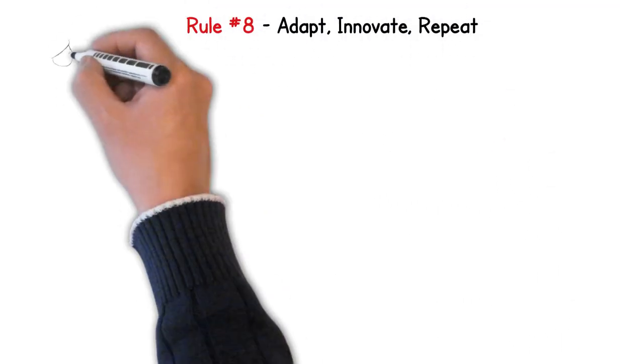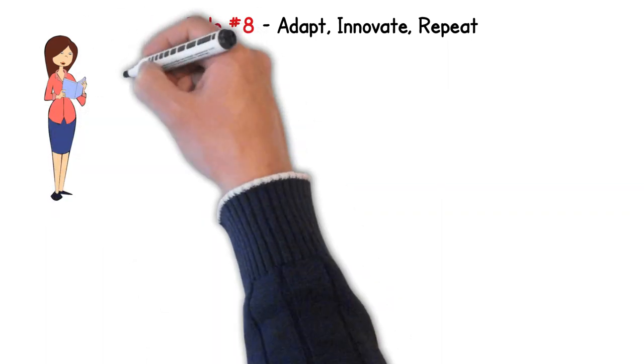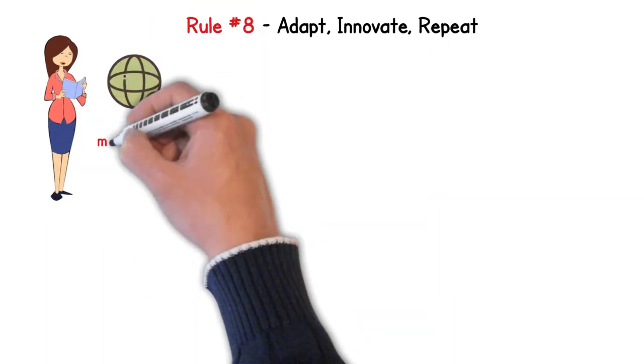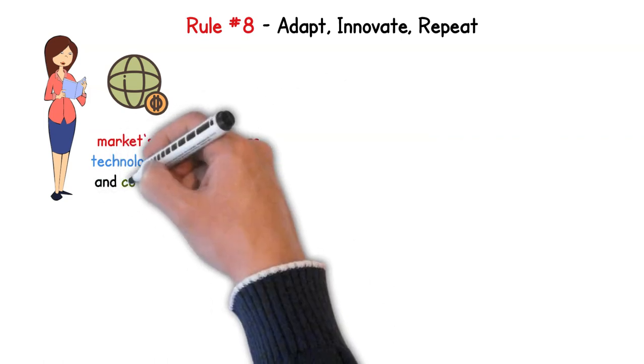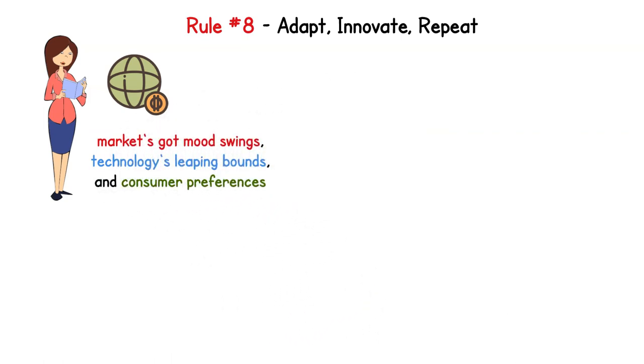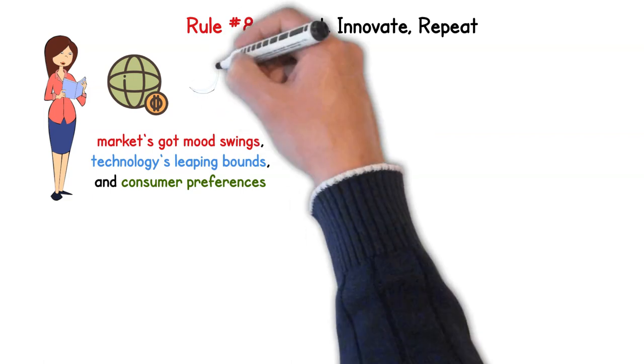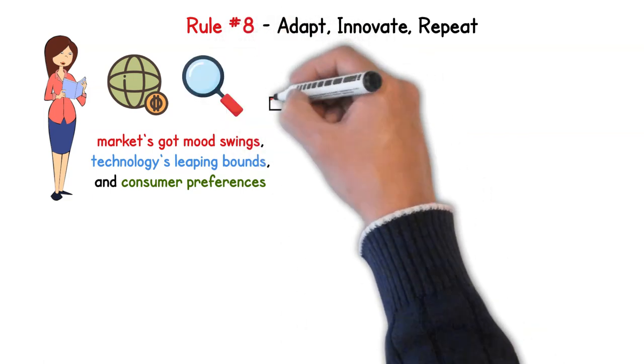Rule 8 is knocking on our doors: Adapt, innovate, repeat. We're living in a time when change isn't just inevitable, it's rapid. The market's got mood swings, technology's leaping bounds, and consumer preferences are as unpredictable as weather sometimes. But here's the twist: in this whirlwind of change lies opportunity. Do you recall Nokia? Once the undisputed king of mobile phones, they lost their crown. Not because they made bad phones, but because they were a tad too slow to jump onto the smartphone trend.